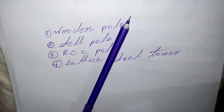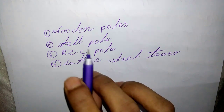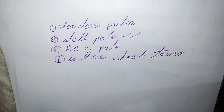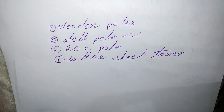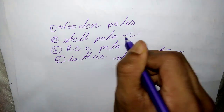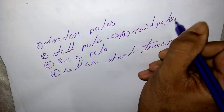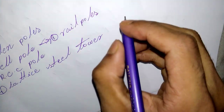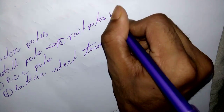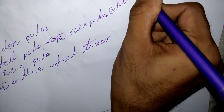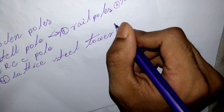Steel poles are often used as a substitute for wooden poles. They have greater mechanical strength than wooden poles, longer life, and permit longer spans to be used. Steel poles are of three types: rail poles, tubular poles, and rolled poles.